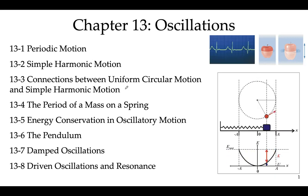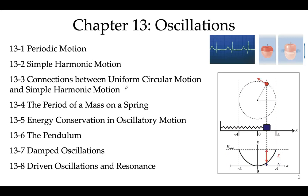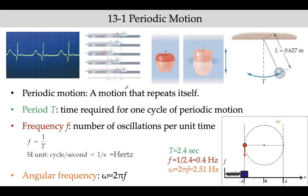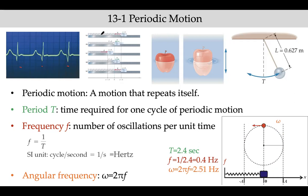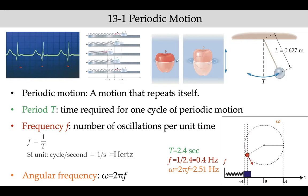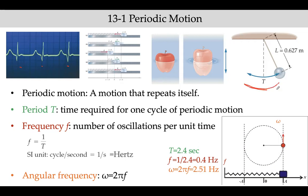This video is about Chapter 13: Oscillations. We will learn about periodic motion, simple harmonic motion, pendulum, energy conservation, and concepts like resonance. Periodic motion is basically motion that repeats itself. For example, a heartbeat is a periodic motion because it repeats with certain time intervals. A harmonic oscillator — a mass connected to a spring — is also periodic, as is an apple bobbing in water, or a pendulum swinging back and forth.